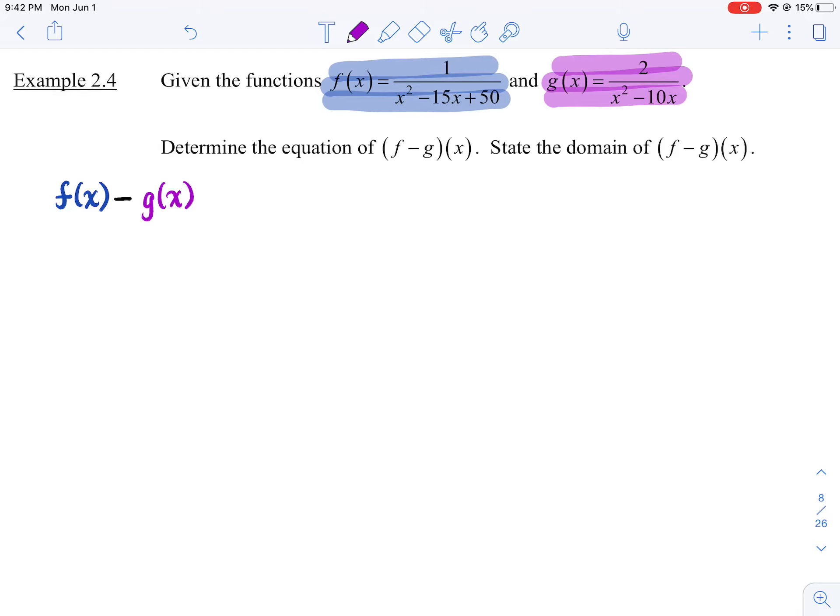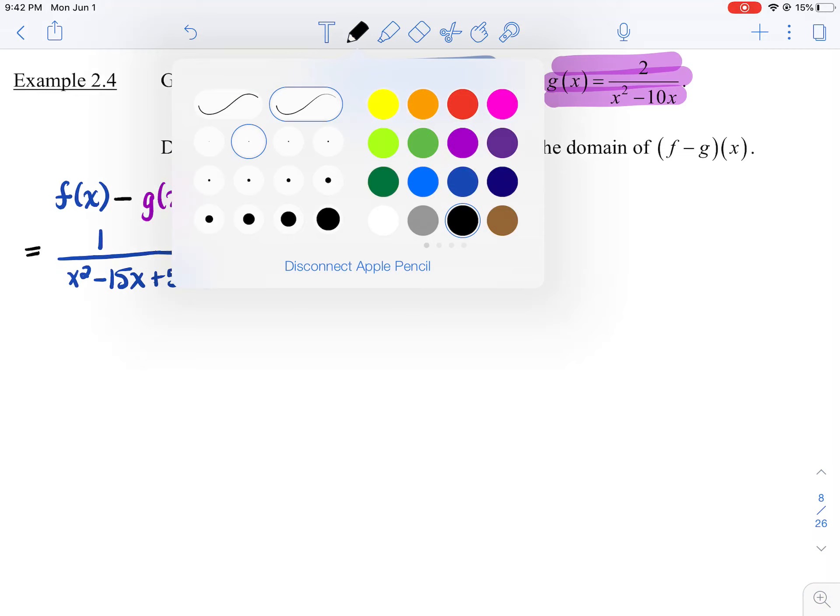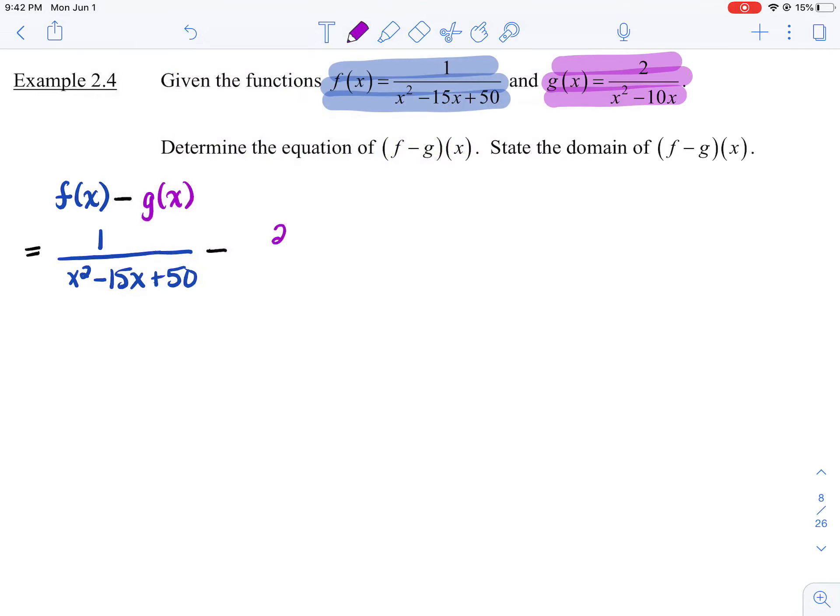All right, what's f at x? f at x is 1 over x squared minus 15x plus 50 minus g at x, which is 2 over x squared minus 10x.